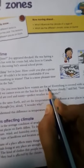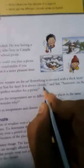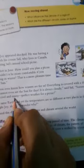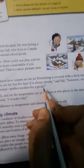Winters. Do you even know how winters are for us? Everything is covered with a thick layer of snow and we cannot even see the sun for days. It is always cloudy, said Sid. Summers on the other hand are cool and sunny. Perfect weather for a picnic.